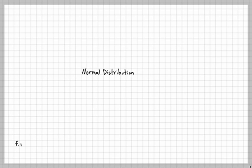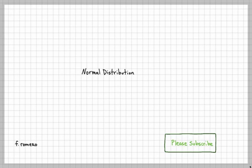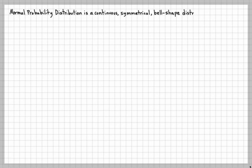This video is going to be about the normal distribution. The normal probability distribution is a continuous, symmetrical, bell-shaped distribution of a normal random variable.